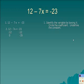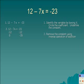Our second step is to remove the constant using the inverse operation of addition. So, we subtract 12 on both sides. We should end up with negative 7x equals negative 35.